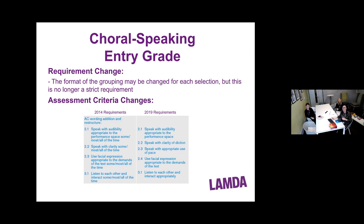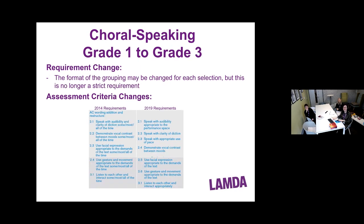For Choral Speaking, Entry Grade to Grade 3: the grouping may be changed for each selection — it's up to the teacher whether to move learners around between pieces or keep them as they are. The assessment criteria have been separated and slightly reworded. For Grades 1 to 3, the grouping remains however the teacher and learners want it. Use of facial expression and use of gesture and movement have been incorporated, along with further separations at the top of the assessment criteria table.